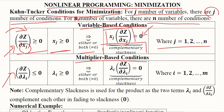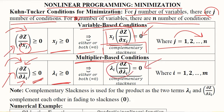The j value can span from one to any positive number. The multiplier-based conditions are similar to the maximization conditions — differentiating the Lagrangian function with respect to the Lagrangian multipliers. All of them should be positive, and if this term is negative, the product can be zero only if one or both terms are zero. Dropping the inequalities and converting to equalities represents the process of complementary slackness. The range of i goes from one to n.